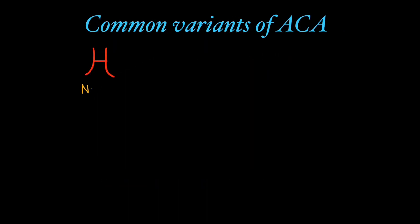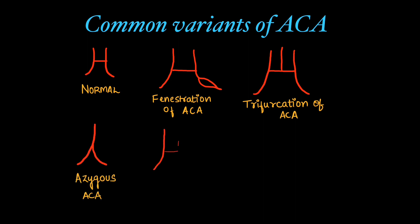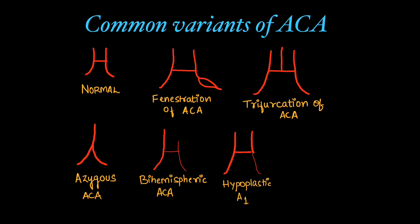Now let's look at some common variants of ACA. The normal configuration is the baseline. There can be a fenestrated ACA, which is a rare entity. There can be trifurcation of ACA, an azygous ACA where there is a single anterior cerebral artery, or a bi-hemispheric ACA where a dominant anterior cerebral artery supplies both hemispheres. There can also be a hypoplastic or absent A1 segment.